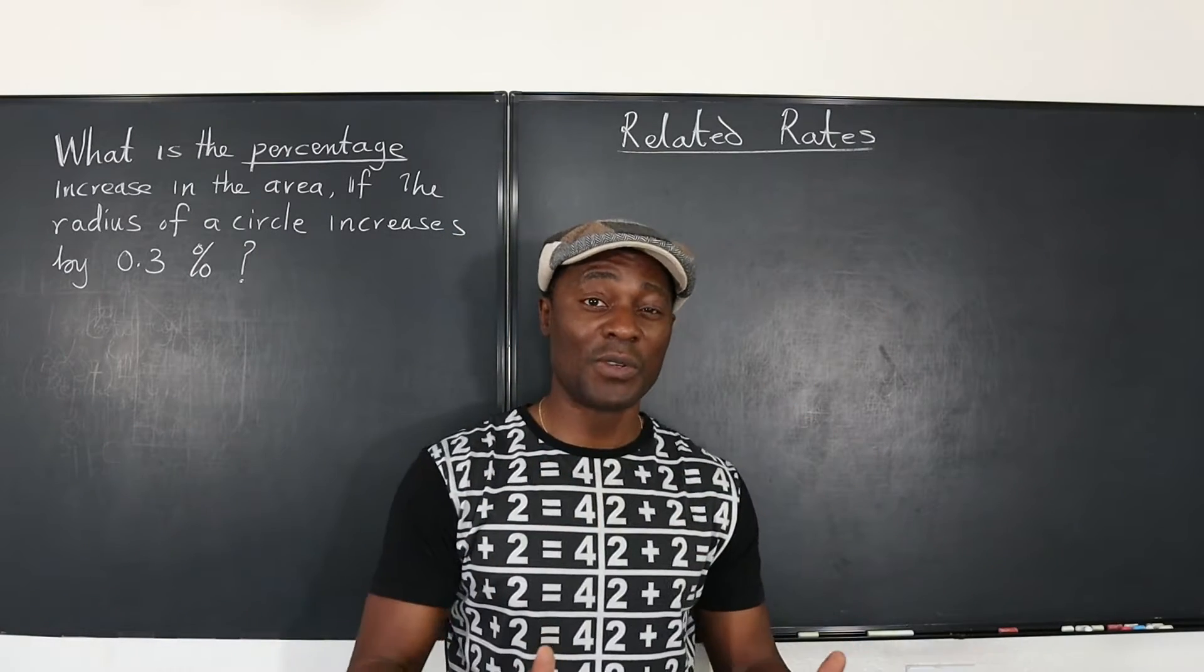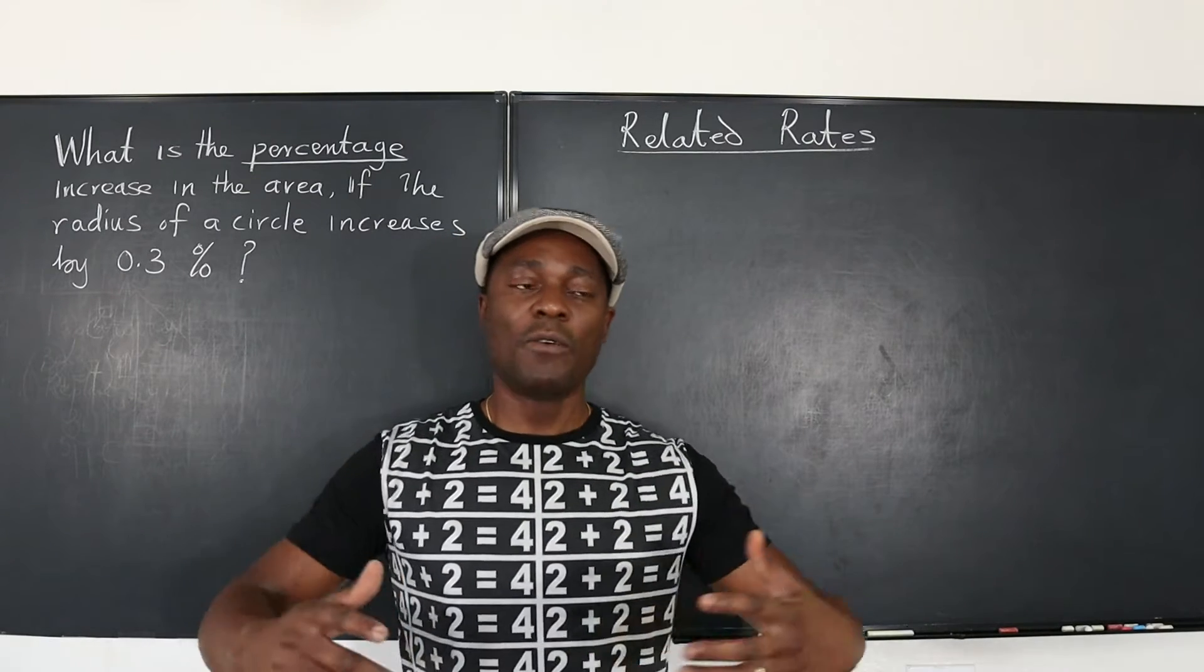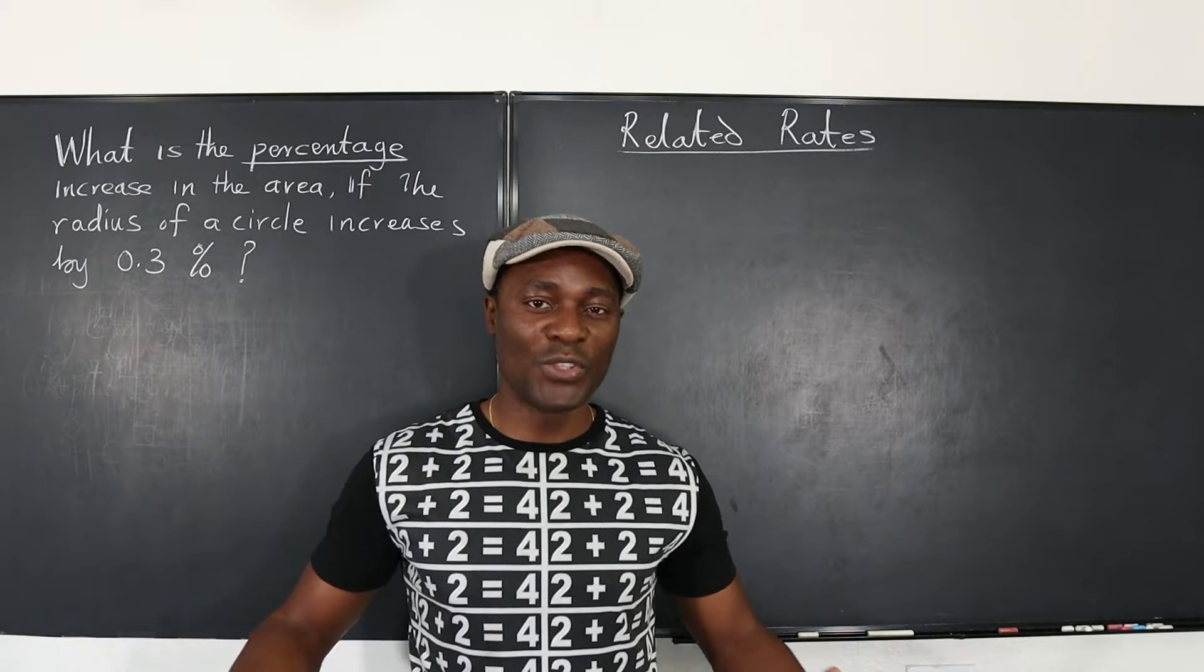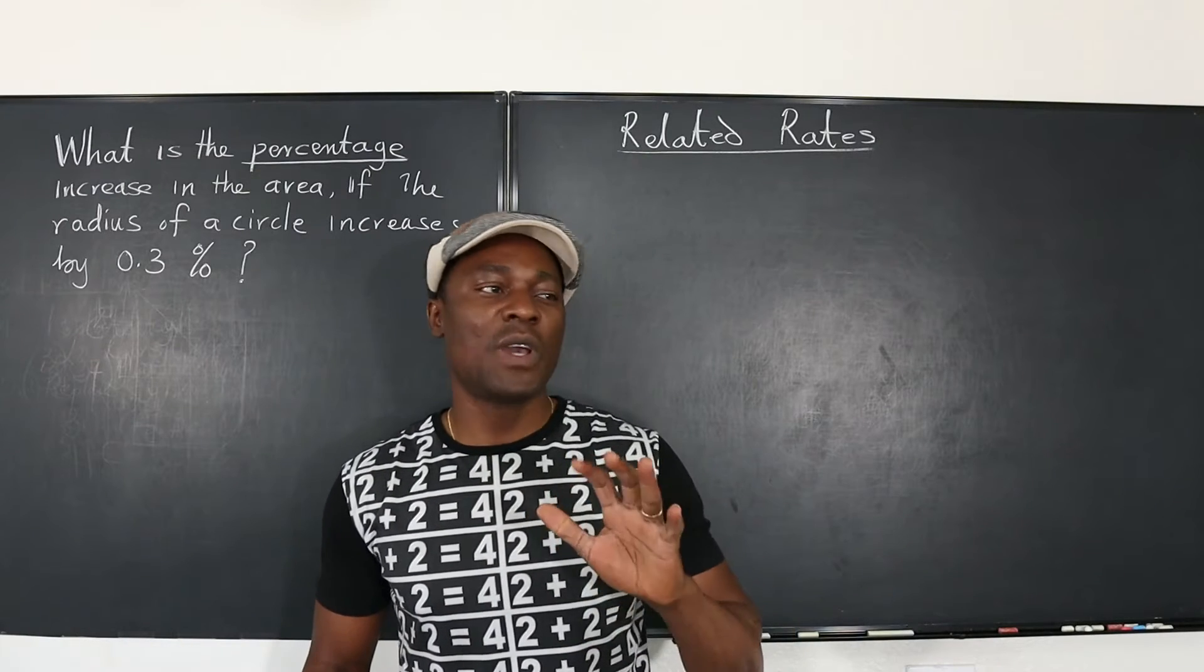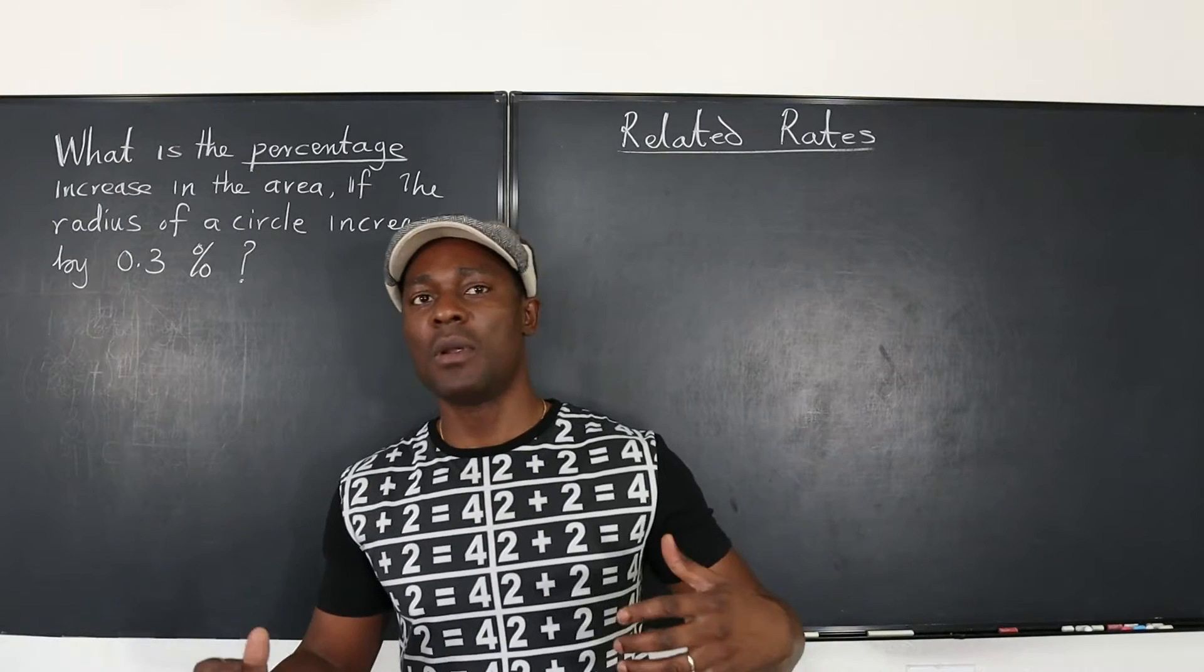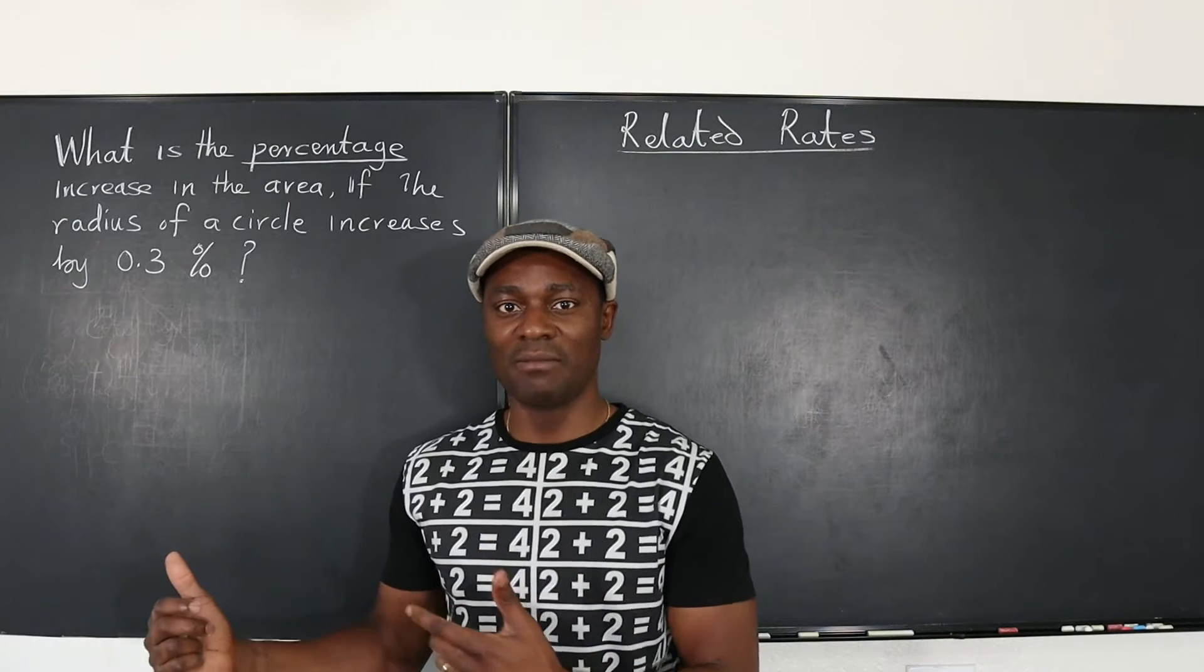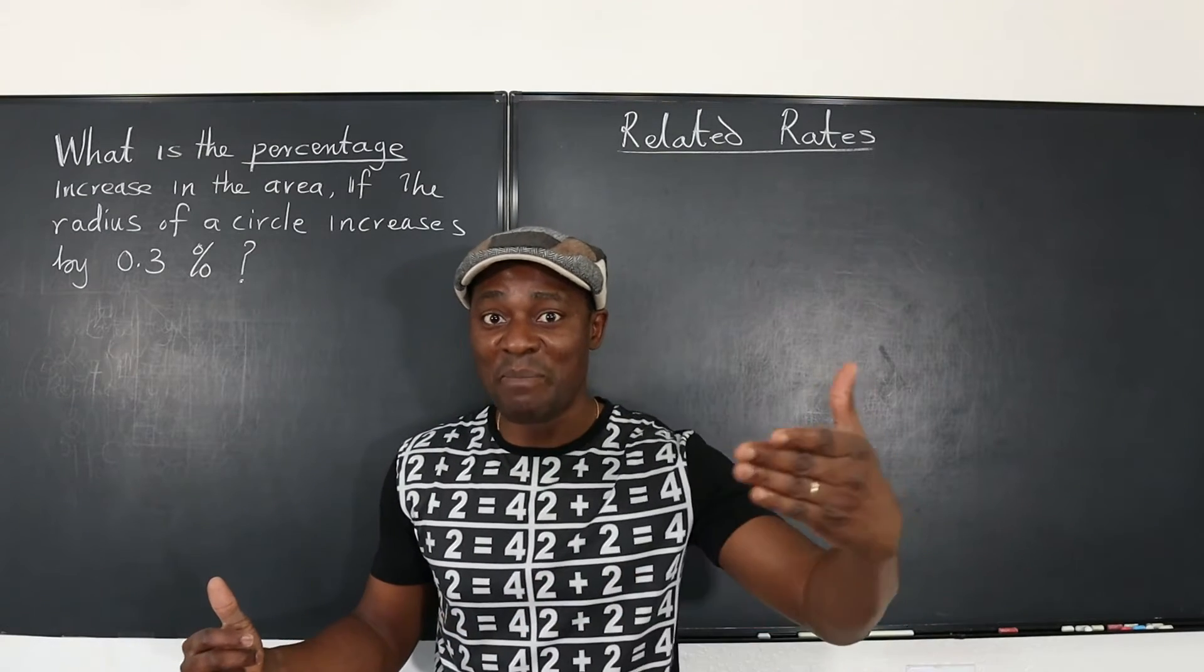For example, the area of a circle is going to change because you change the radius by a percentage. For many related rate problems, what you get will be a question like the radius is increasing at the rate of two centimeters per second. But in this problem, there is no time, so it's not depending on time, it's depending on itself because it's expressed as a percentage.